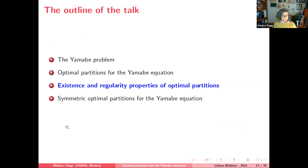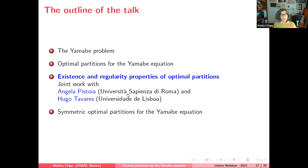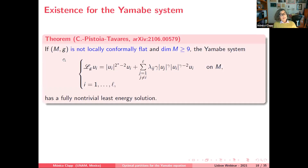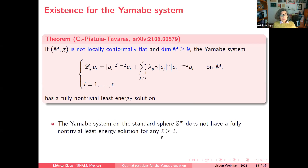These results are joint work with Angela Pistoia from Rome and Hugo Tavares from Lisbon. The first result concerns the existence of solutions for the Yamabe system: under some conditions the system has a fully non-trivial least-energy solution. The conditions on M are: first, M is not locally conformally flat; and second, the dimension is larger than or equal to 9. These are necessary since the Yamabe system on the standard sphere, which is locally conformally flat, does not have a fully non-trivial least-energy solution for any L.